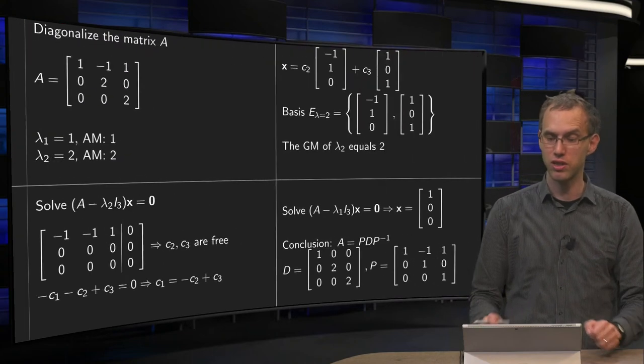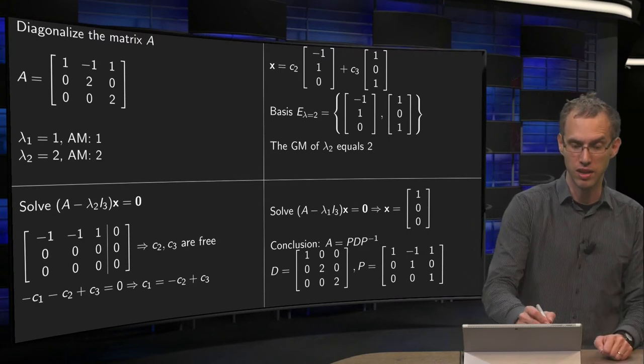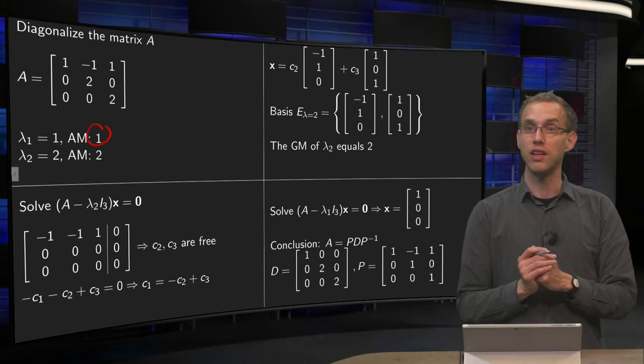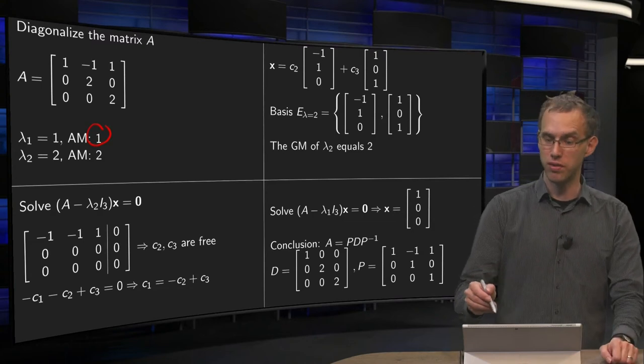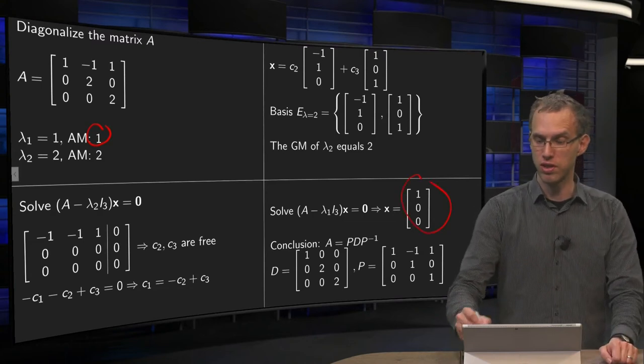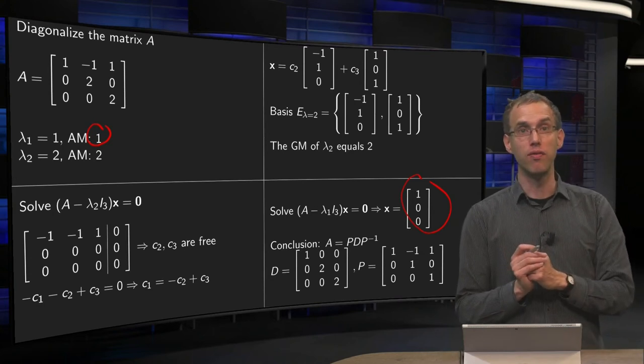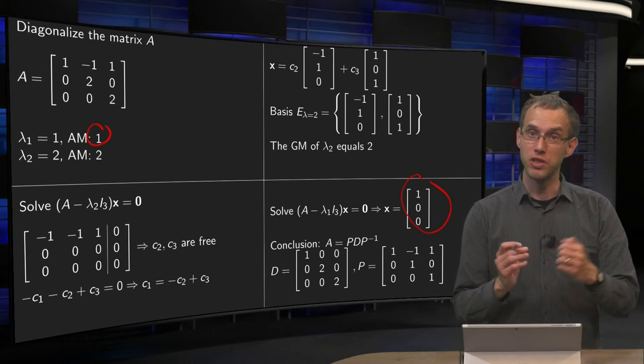Now we turn our attention to the first eigenvalue, this one. It has multiplicity 1. Going through the same procedure we find our solution x equals 1, 0, 0, so an eigenvector of lambda equals 1 is the vector 1, 0, 0.